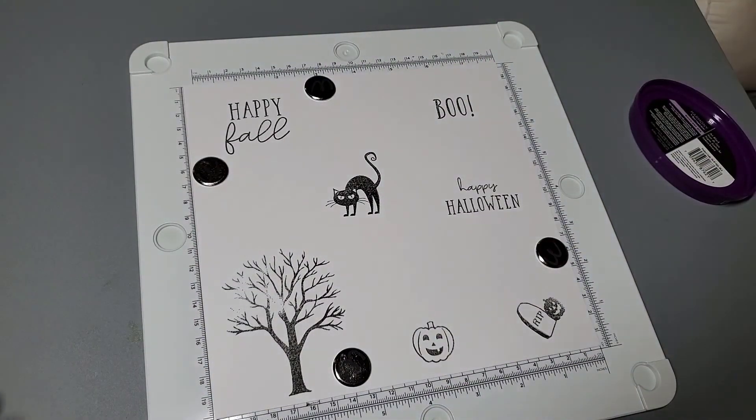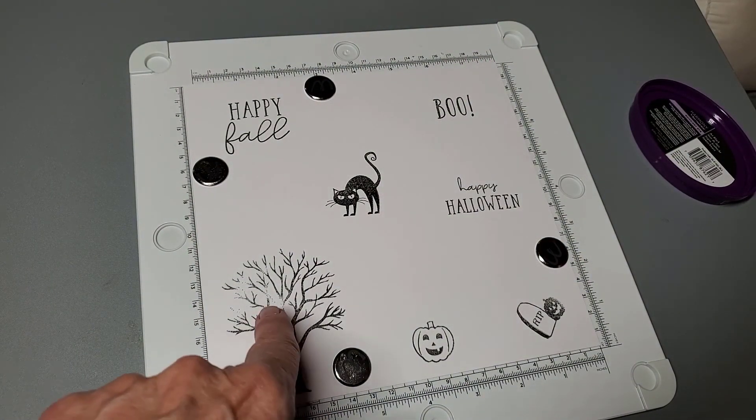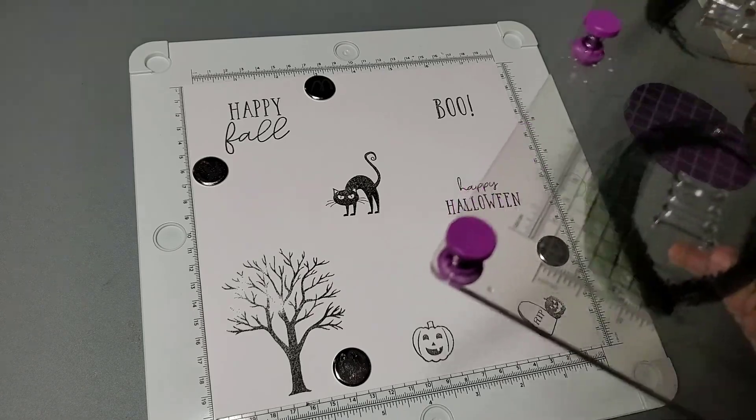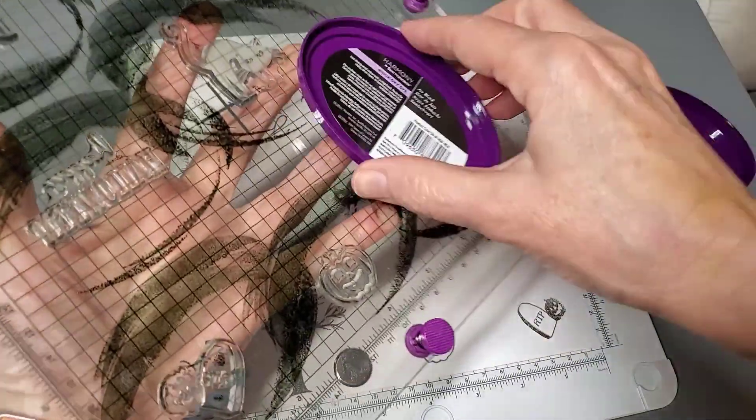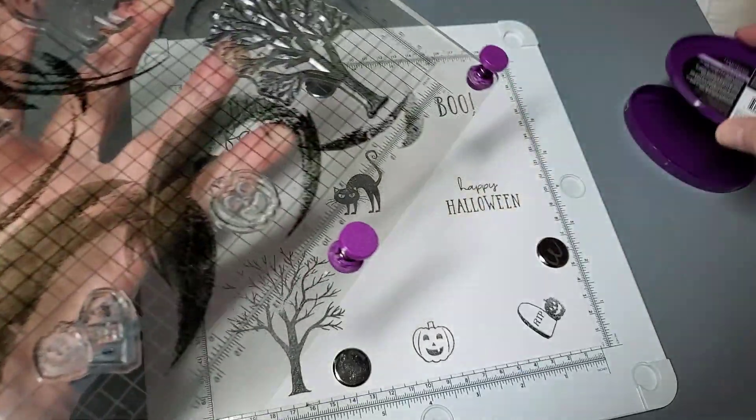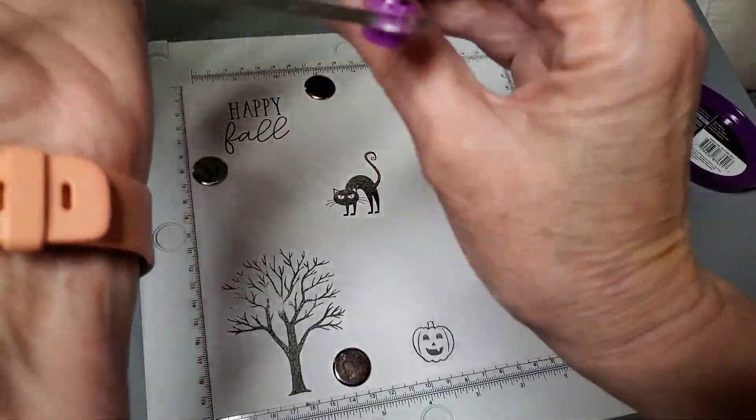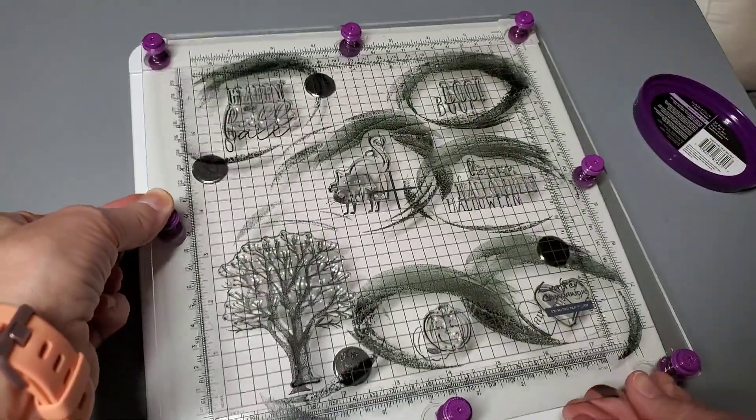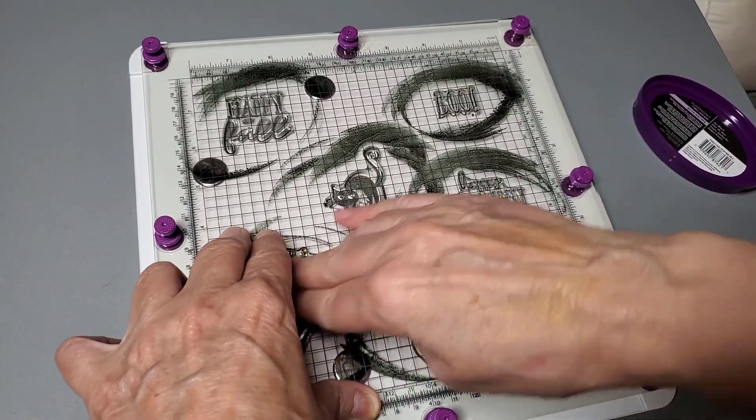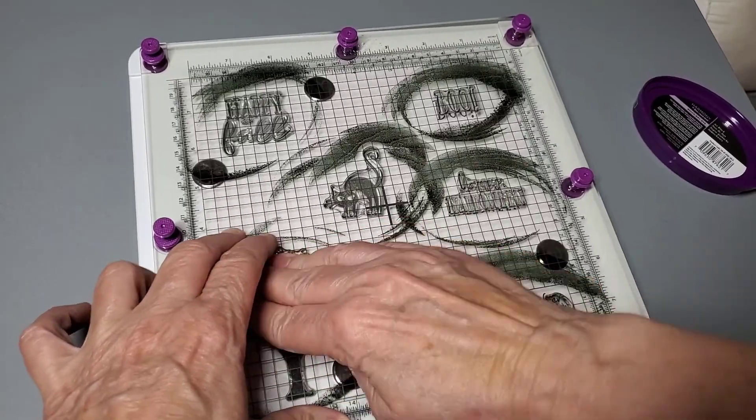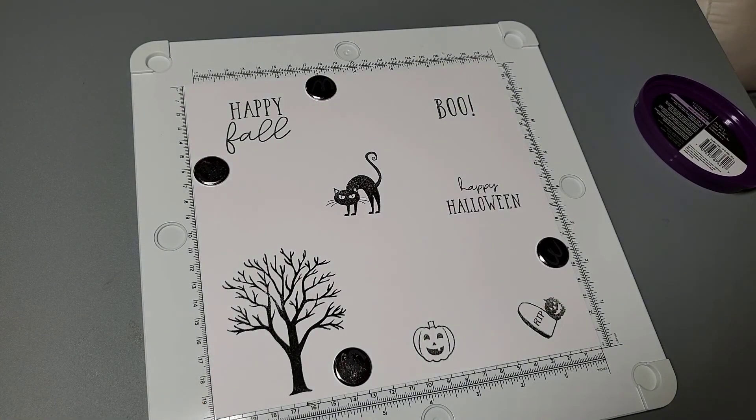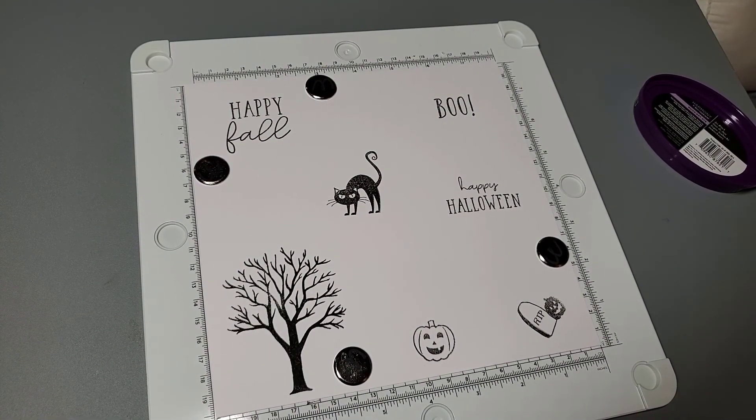I just lift it off. That one looks really good, but now my tree isn't the best, so I'm going to ink my tree up again. I put the little feet in the grooves and just come in, and now my tree looks perfect.